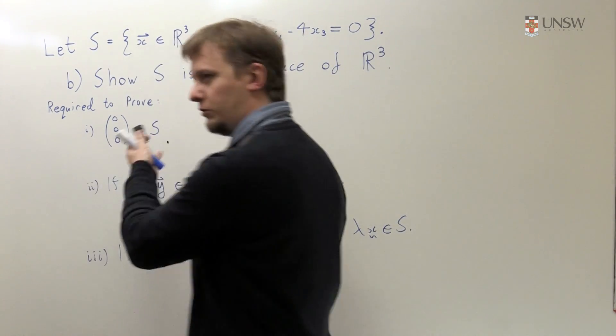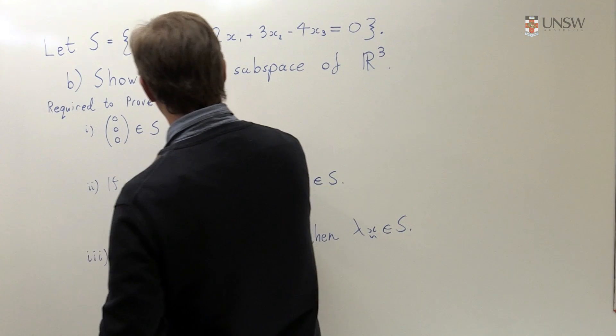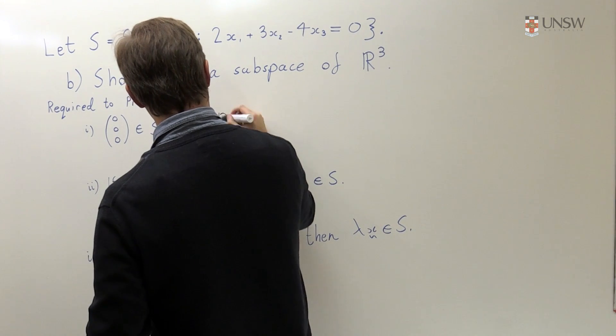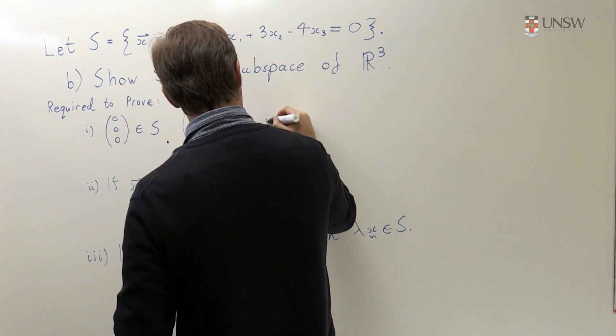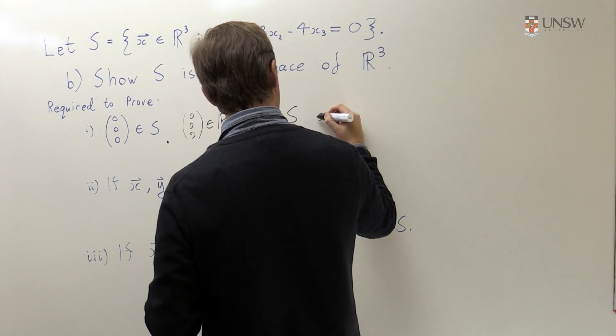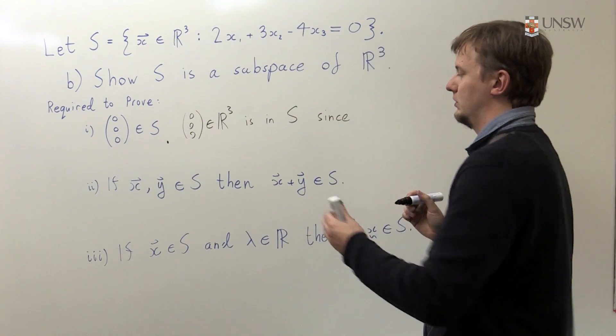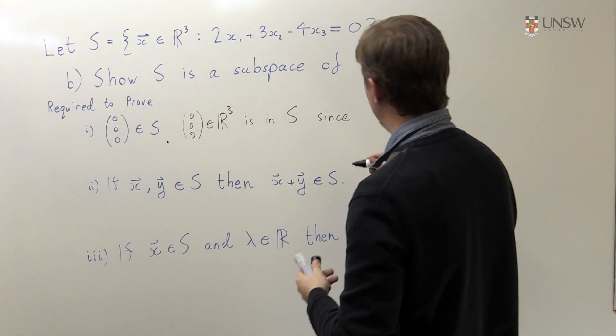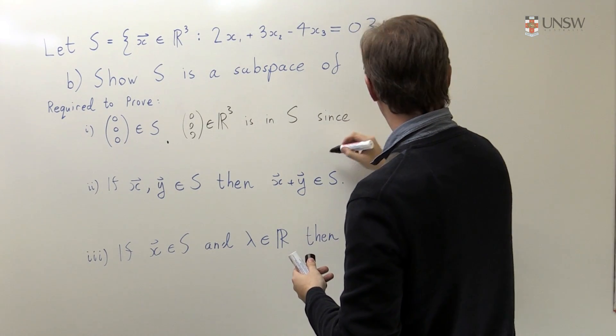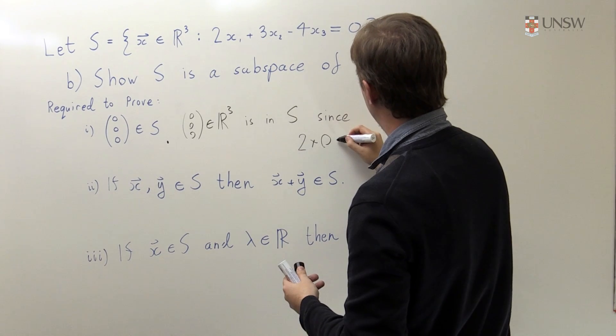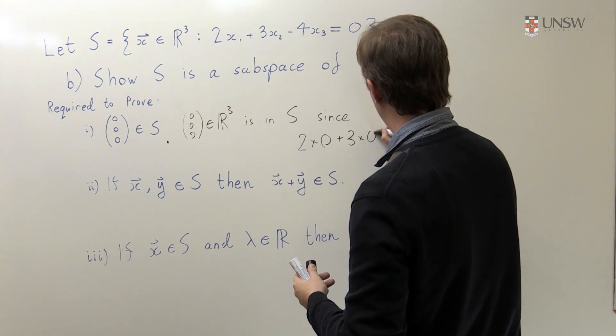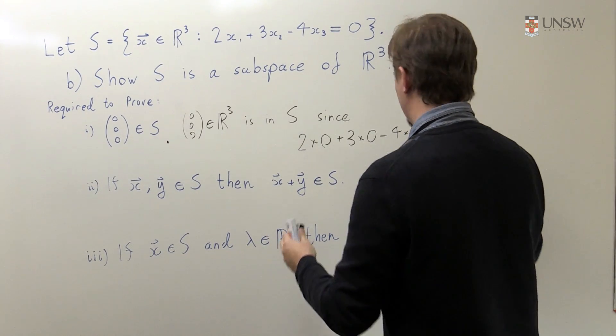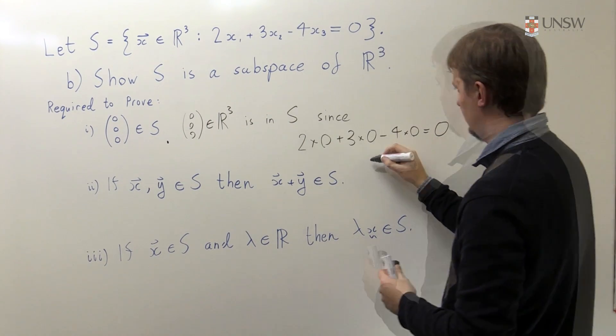So how do I prove that (0, 0, 0) is in S? Well, the zero vector from R³ is in S since if I just take the components from (0, 0, 0) and plug it into the condition, I see that the condition holds. So I see that 2 times 0 plus 3 times 0 minus 4 times 0, and all that is equal to zero as required.